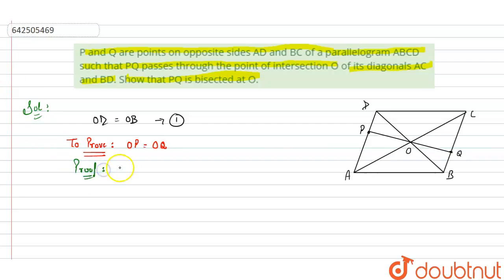In triangle ODP and triangle OBQ, what we have: OD is equals to OB from equation 1.